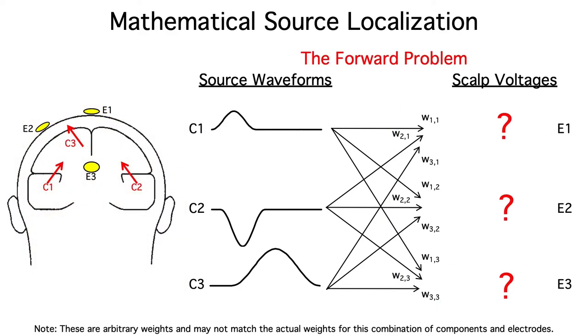This is called the forward problem, the problem of estimating the voltages in our scalp electrodes if we knew the locations, orientations, and source waveforms of the underlying components. And it's a straightforward, tractable physics problem.